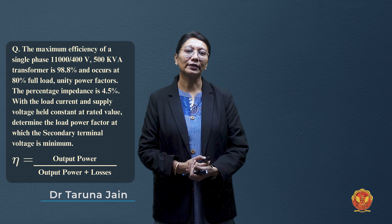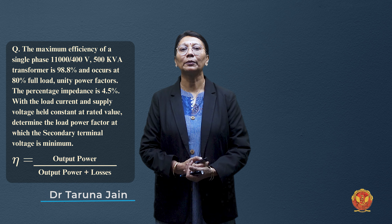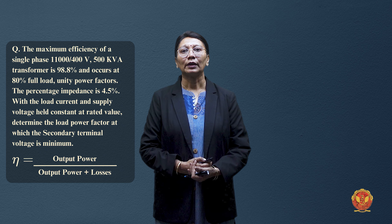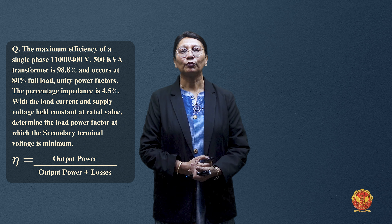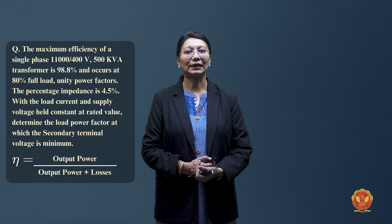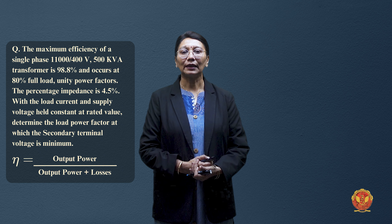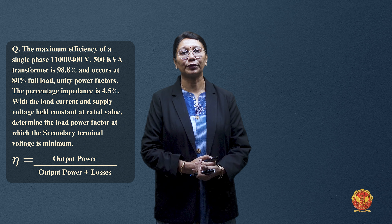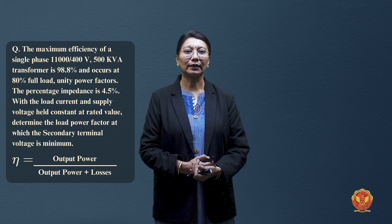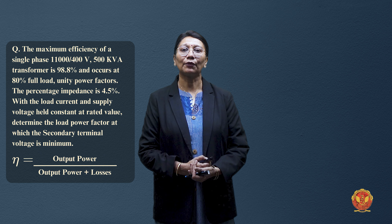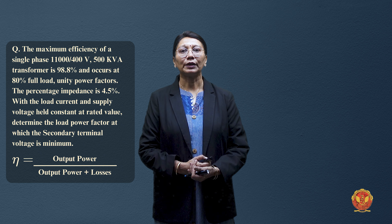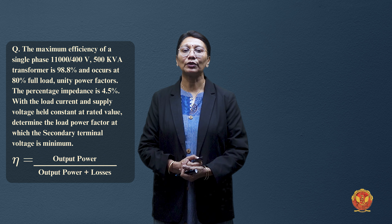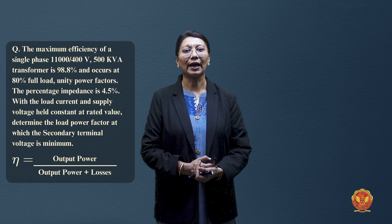In this numerical problem, we will see how much maximum voltage regulation is possible with minimum impedance values. For that purpose, let us start with the data. We are given maximum efficiency of a single-phase 11,000/400V transformer. Maximum efficiency occurs at 80% full load at unity power factor.